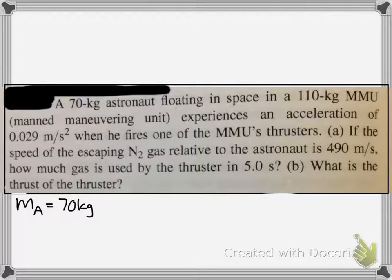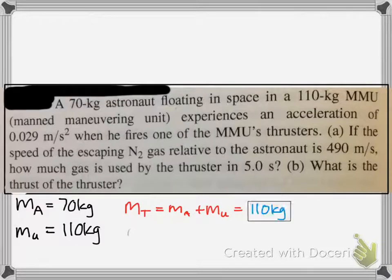The mass of the astronaut, 70 kilograms. Mass of the manned maneuvering unit or the mass of the unit is 110 kilograms. Combined, you can call it the mass total, is 110 kilograms. You kind of do that because you may need to use combined units for later because it's moving together as one, so you kind of write that information.